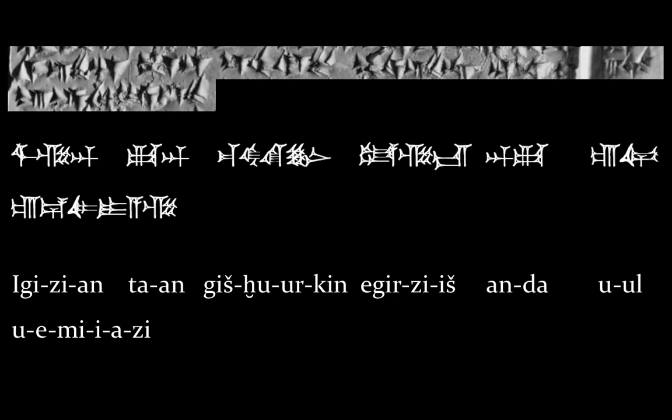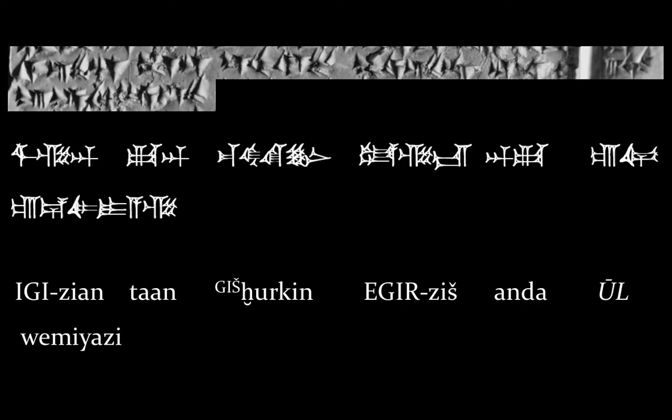However, this is like the phonetic spelling of each word. If we want to read the real words, we must transform them from phonetic spelling into formal spelling, and the result is this text. Now, I'm sure you're asking yourselves, why is Hittite written with a mix of lowercase, uppercase, and uppercase italics? The reason is that what is written in lowercase is Hittite, what's written in uppercase is another language called Sumerian, and what's written in uppercase italics is yet another language called Akkadian.